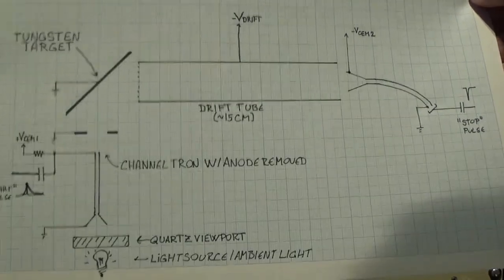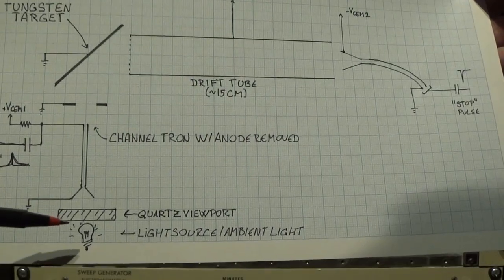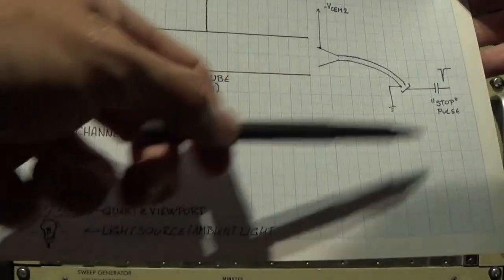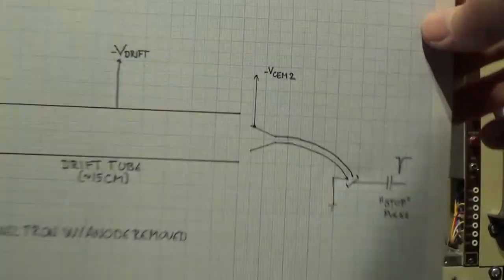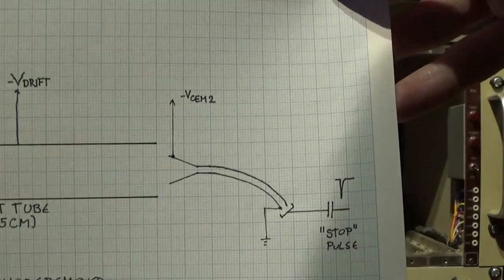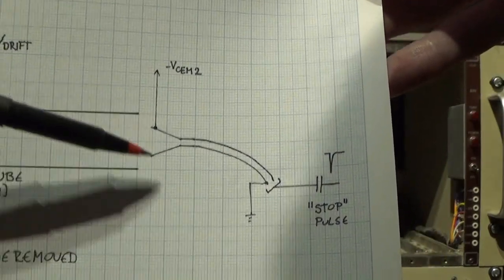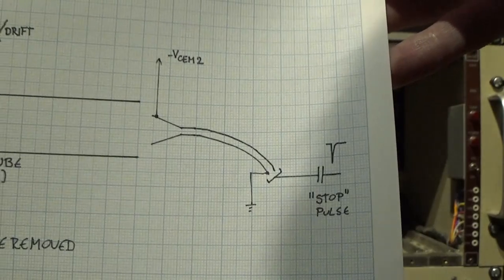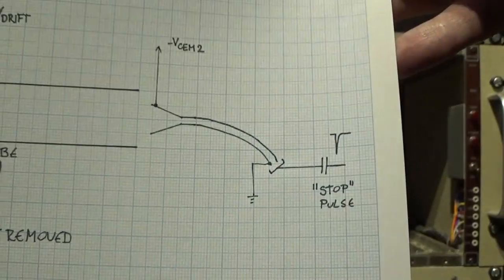So the basic setup is this. This half is exactly as it is in any mass spectrometer, the vast majority of mass spectrometers. There's a channeltron set up to detect ions, in this particular instance, positive ions.